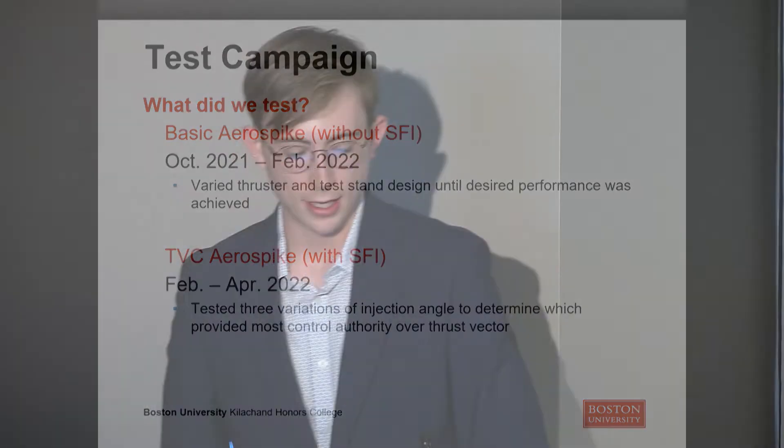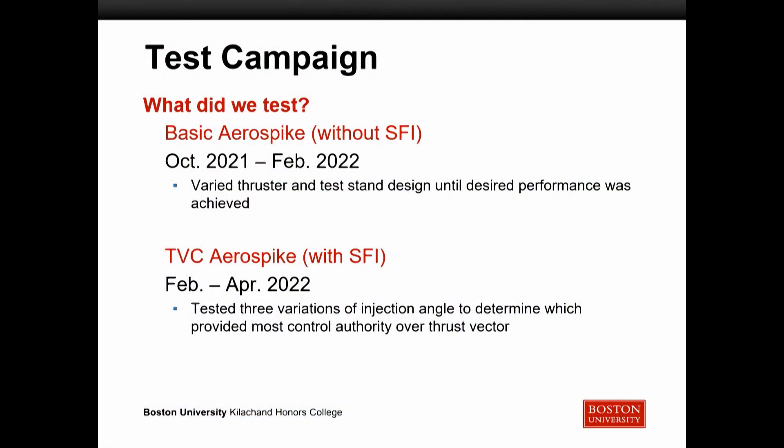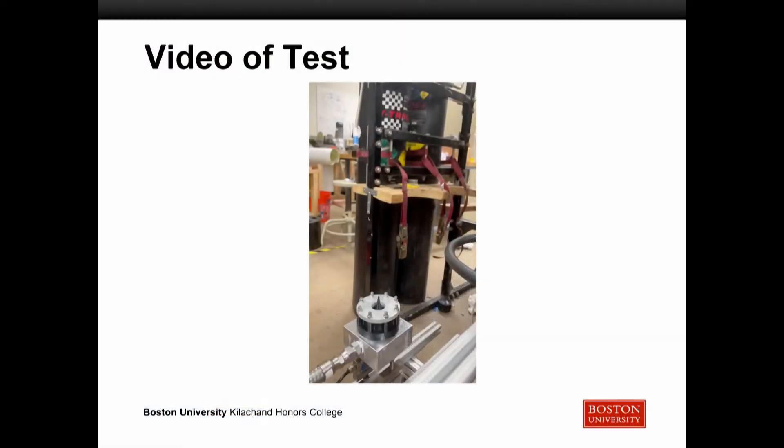In the fall, we spent the majority of the semester testing just the basic aerospike without secondary fluid injection, varying the thruster and test stand design until the desired performance was achieved. In the spring, we focused on thrust vector control using secondary fluid injection, where we tested three variations of injection angle to determine which provided the most control authority over the thrust vector.